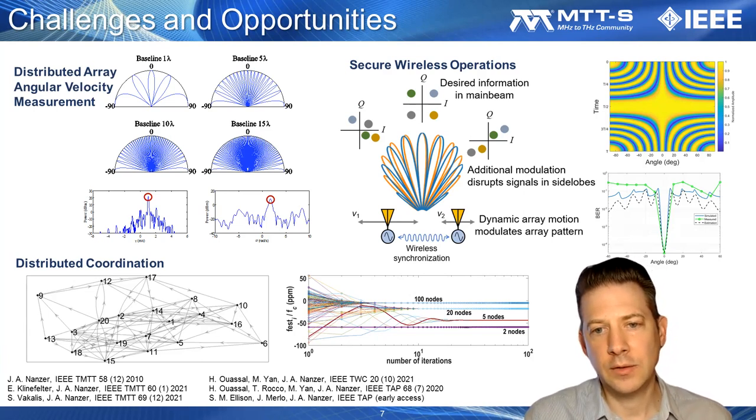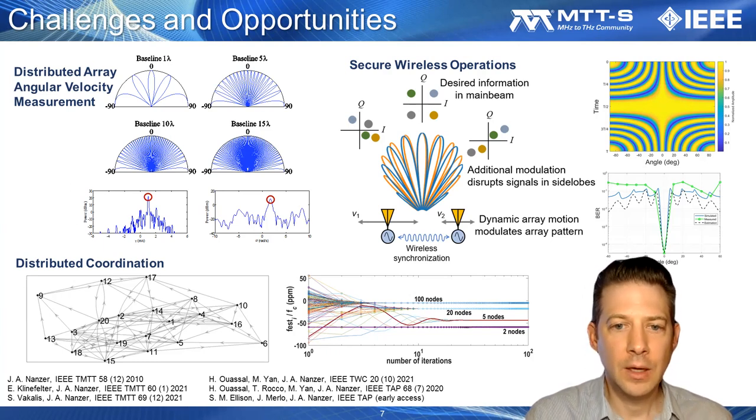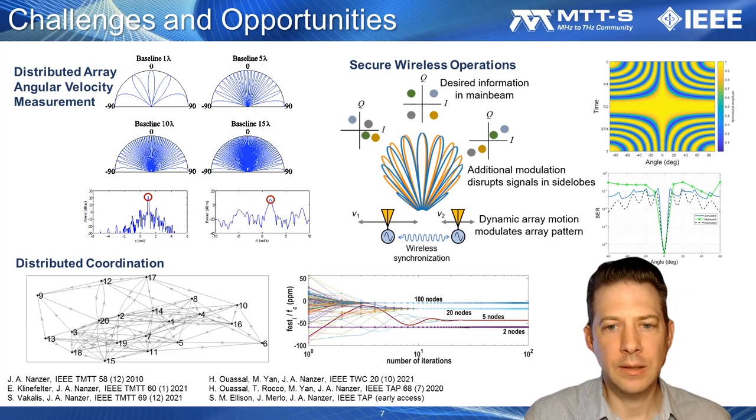But along with these challenges, there are a number of very exciting opportunities enabled by distributed arrays, principally from their highly distributed nature. For example, rather than trying to mitigate the energy sent in a wide number of directions through the grating lobes, I'll discuss research done in my group that aims to leverage the presence of grating lobes for new applications in wireless systems.